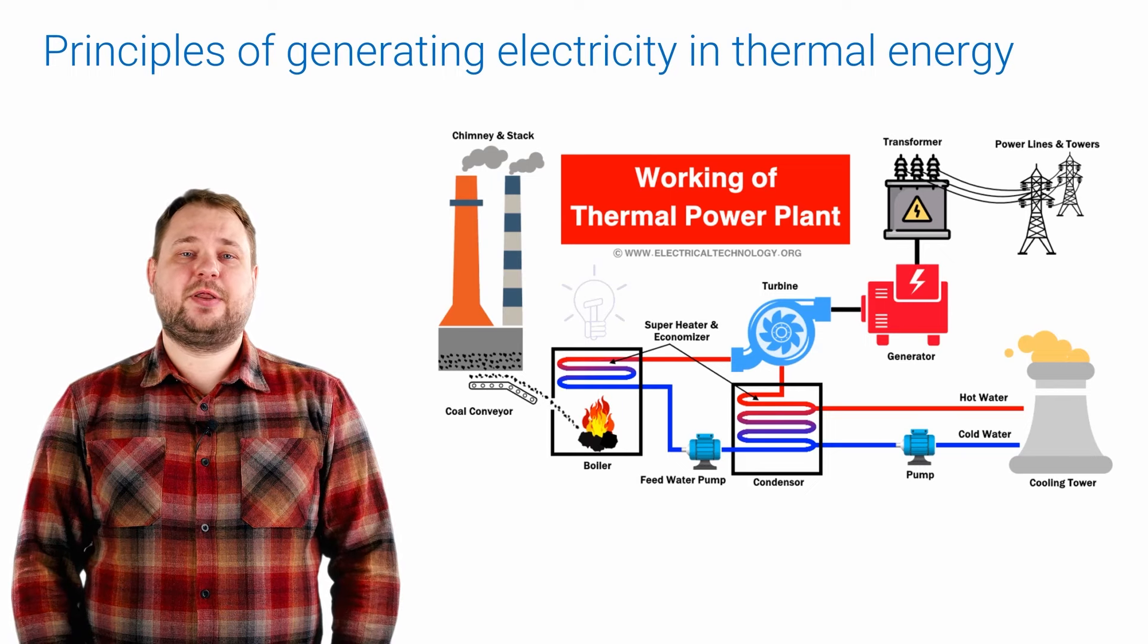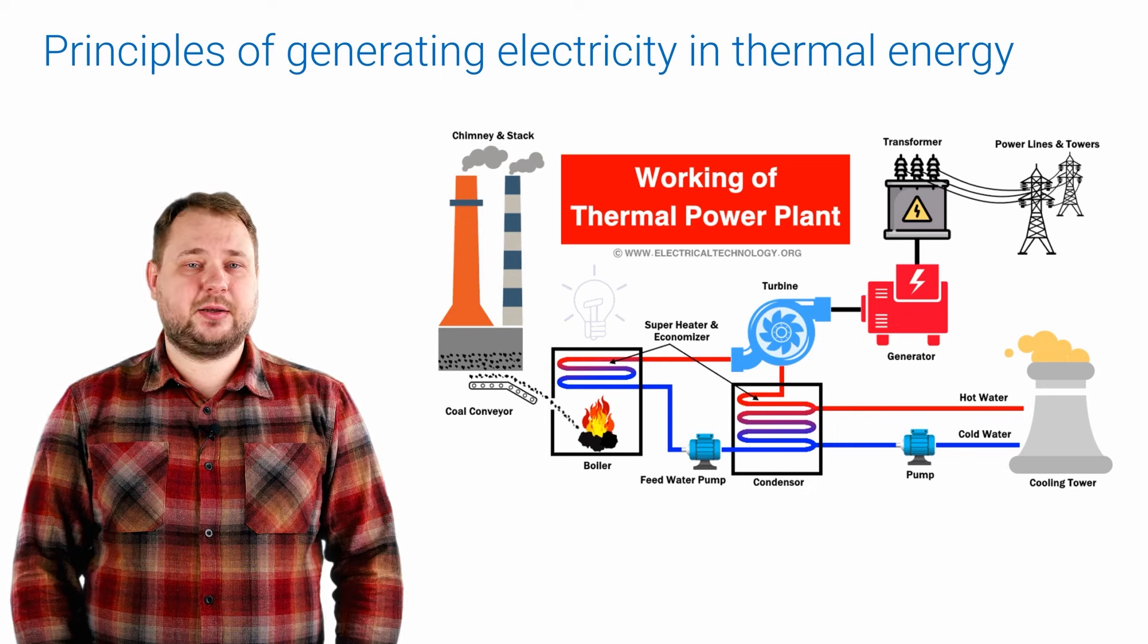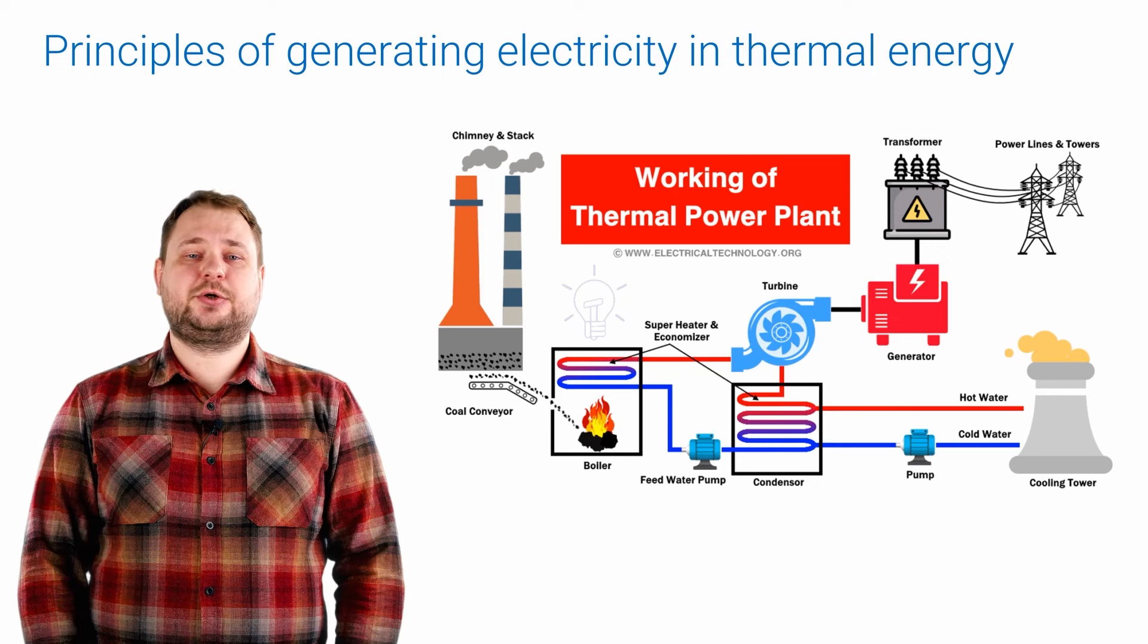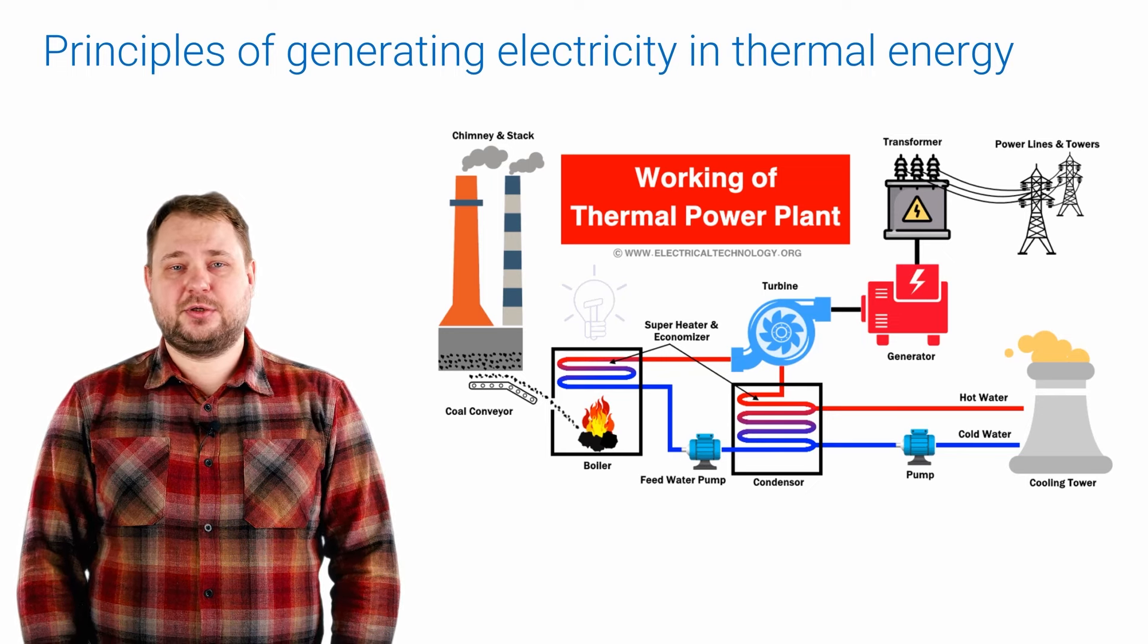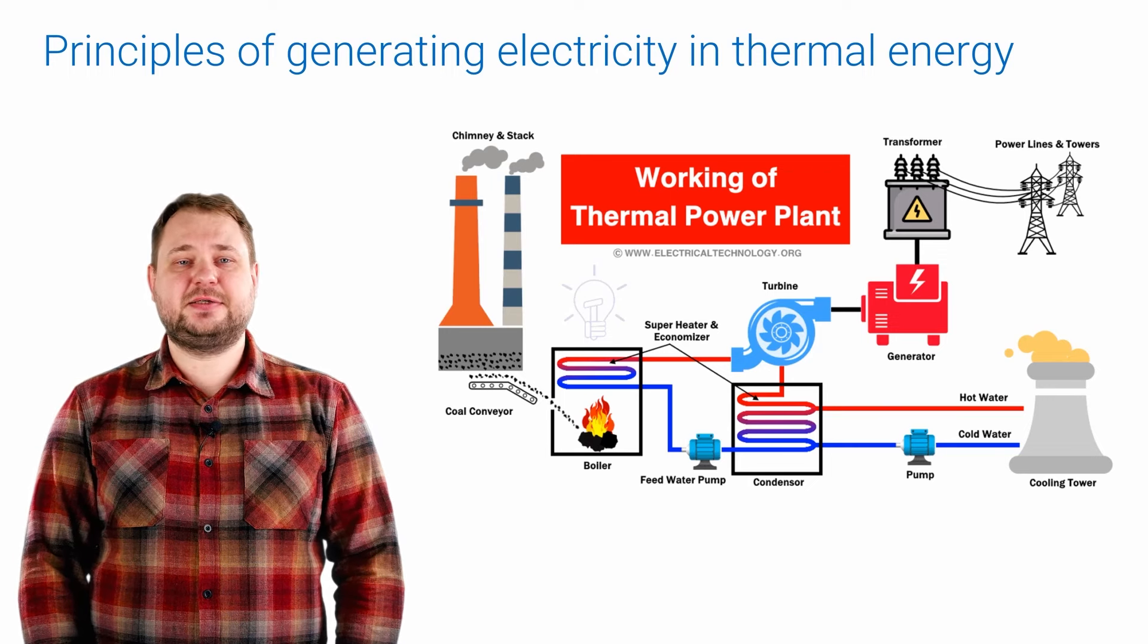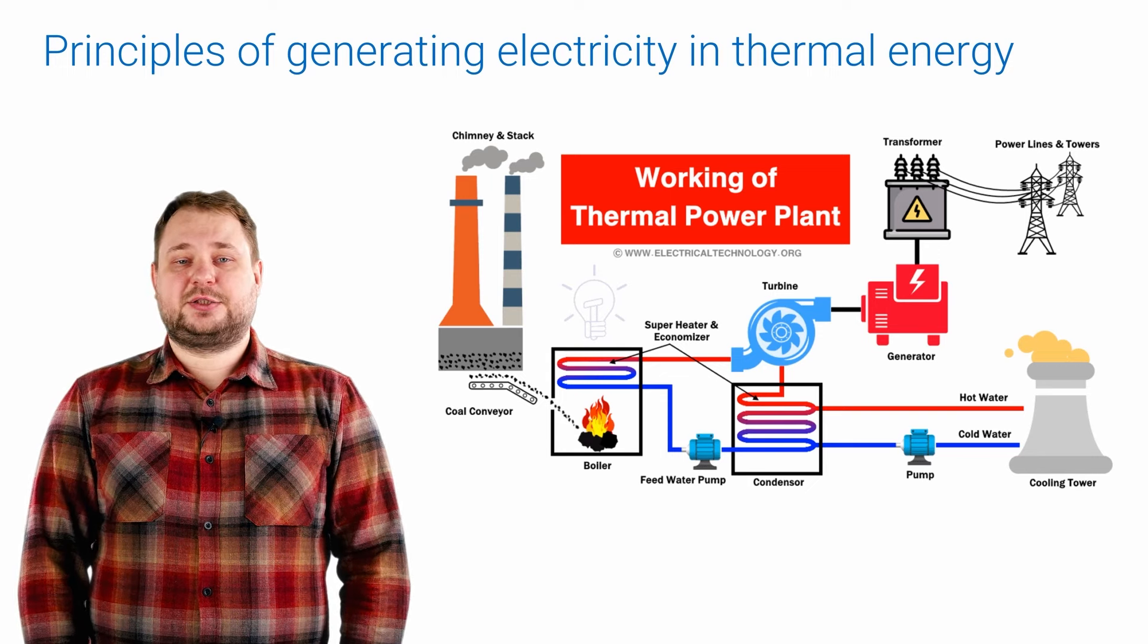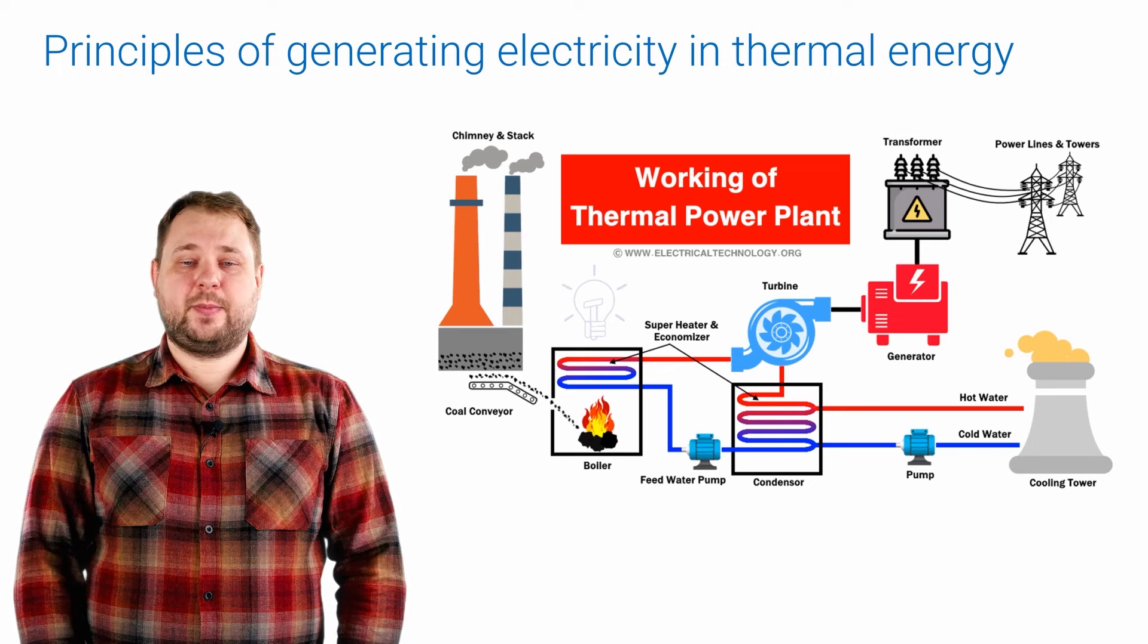The steam produced in the boiler is directed to the blades of the steam turbine. The steam pressure causes the turbine to rotate, which in turn causes the generator to rotate. The rotation of the generator converts the mechanical energy received from turbine into electrical energy. Then the electricity enters the network in order to be distributed among consumers.